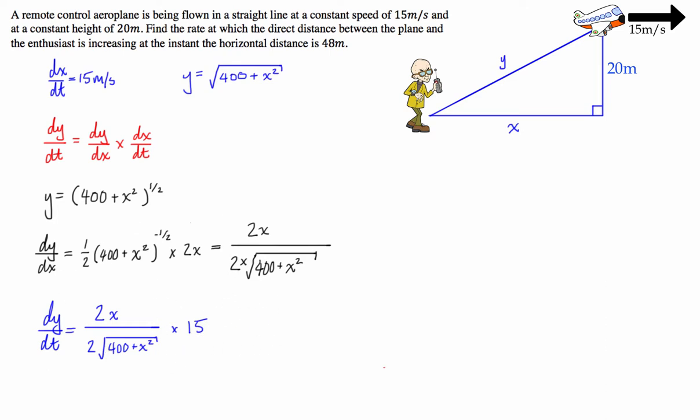So, this one here, it's asking us to evaluate this when X is going to be equal to 48. So, we're going to do that. So, longhand, I'll go through all of the working out with you. We're going to have 2 times 48 over 2 times the square root of 400 plus 48 squared, which is 2304. We're going to multiply all of that by 15. And what we get is if you're going to leave it in fractional form, we're going to get 180 on 13, which is approximately equal to 13.85 meters per second.